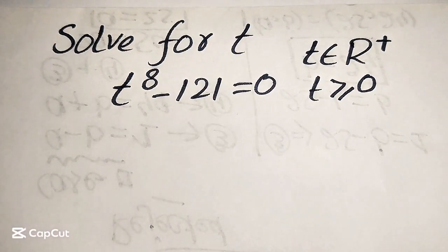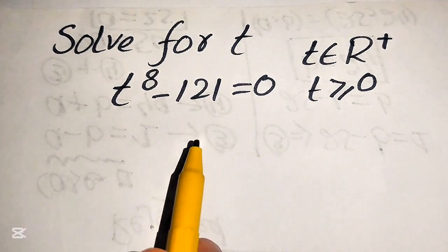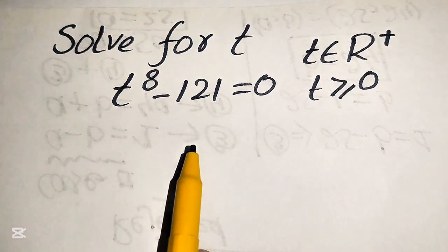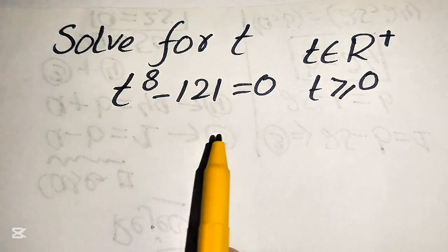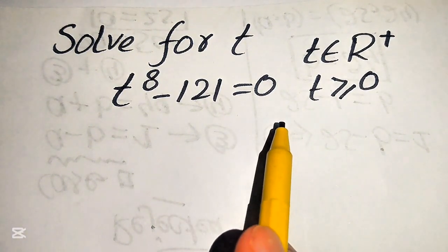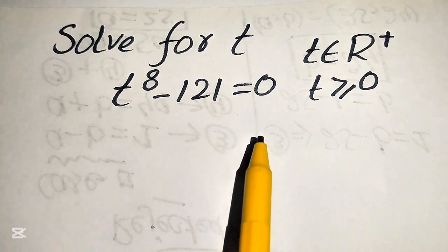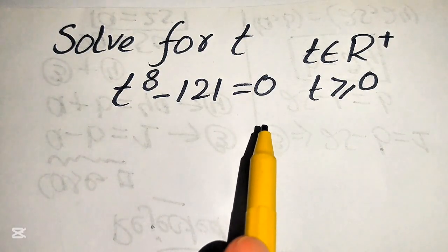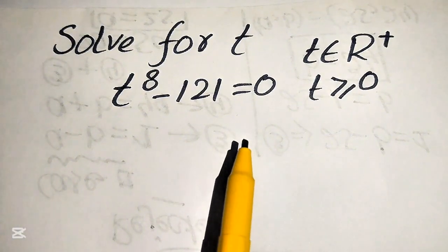Hello everyone, welcome to solve this nice lumped algebra problem. Here we have t to the power of 8 minus 121 equals 0, and we solve this problem for the positive real values of t. I hope you like this method, but if you have another method in mind, please do not hesitate to write it in the comment section.